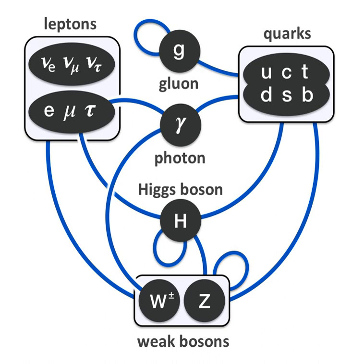The Feynman diagram calculations, which are a graphical representation of the perturbation theory approximation, invoke 'force-mediating particles,' and when applied to high-energy scattering experiments are in reasonable agreement with the data. However, perturbation theory, and with it the concept of a force-mediating particle, fails in other situations — including low-energy quantum chromodynamics, bound states, and solitons. The gauge bosons of the Standard Model all have spin-1, making them bosons; as a result, they do not follow the Pauli exclusion principle that constrains fermions, and thus bosons do not have a theoretical limit on their spatial density.